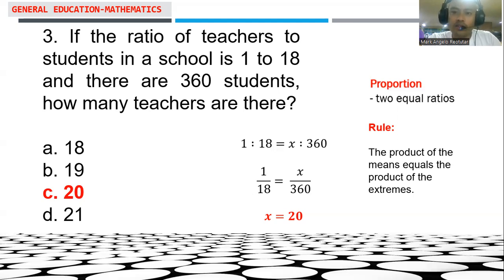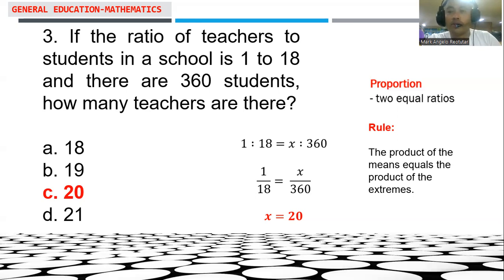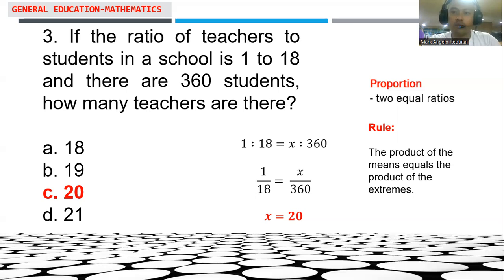If there were 360 students, how many teachers are there? We establish another ratio, x over 360, following the same position as the first ratio. Here x represents the number of teachers and 360 represents the number of students. We equate the two to form a proportion, and computing x gives us 20.